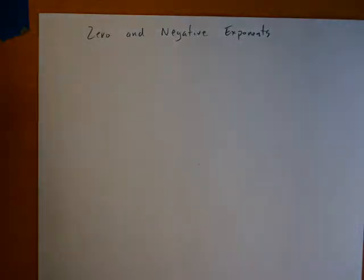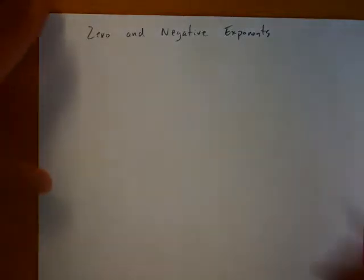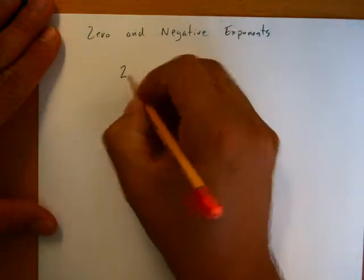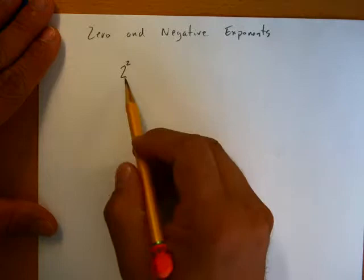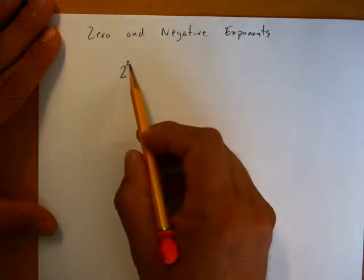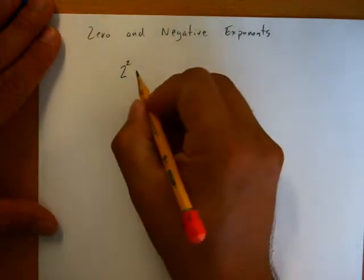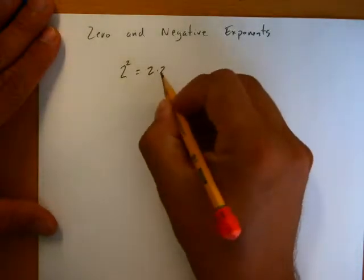Idea of zero and negative exponents. The word exponent is derived from Latin words meaning out of place. And when we look at an exponent, say we have two squared, it's kind of out of place. It's like a little guy right there and it's in the wrong spot, but we know what to do with this guy.